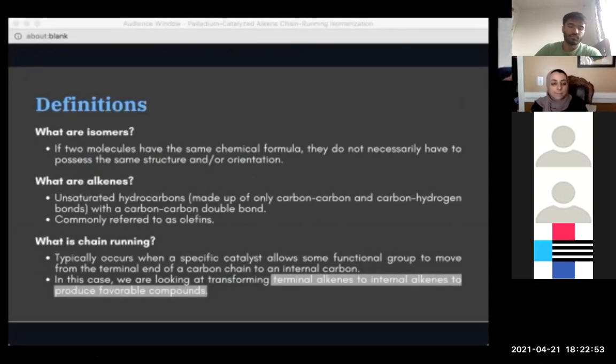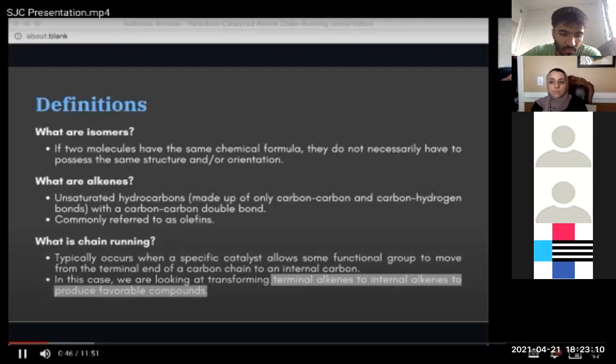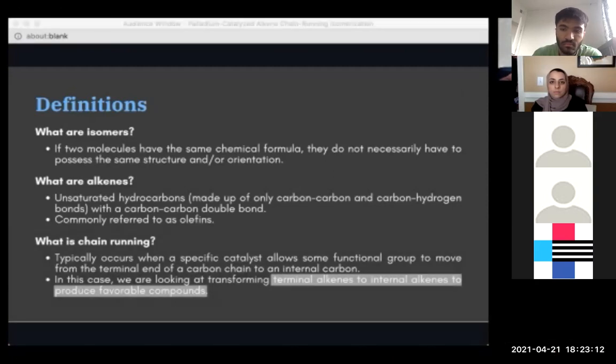First off, we have isomers, which are basically chemical compounds that have the same molecular formulas, but different spatial and structural arrangements of atoms. Isomerization reactions look at how we can chemically transform between two different isomers. Next up, we have alkenes. Simply put, alkenes have a carbon-carbon double bond. The last term I want to define is chain running, which is also known as chain walking or chain migration. Chain running usually occurs when some catalyst, which is usually a transition metal catalyst, allows a group on a carbon chain to move from a terminal end to an internal position. In this case, we are going to be looking at transforming terminal alkenes to favorable internal alkenes and focus on why that is important.